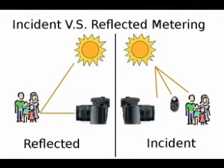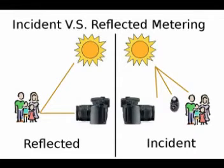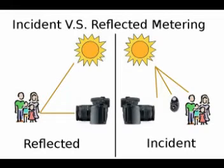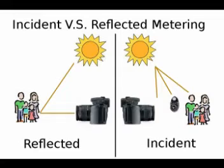Let's begin our discussion of metering with the two basic types. There's reflected, which is found in cameras because it's easy to measure reflected light from the camera. And then there's incident, which is done with a handheld meter and is used to measure the amount of light falling on the subject. The problem with reflected light metering is the light meter only sees gray and the amount of light reflected from the subject, so it's trying to resolve everything to a shade of gray.